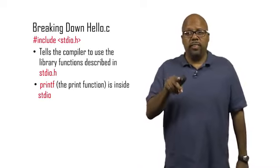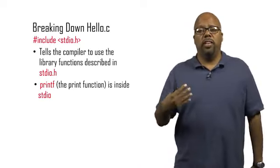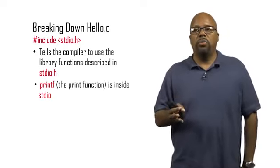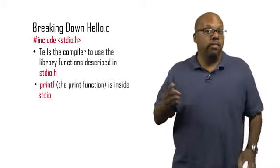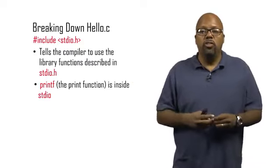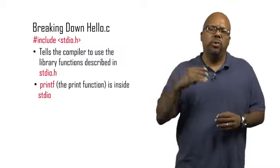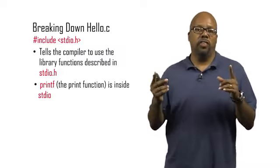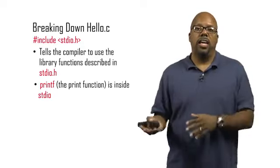In this case stdio.h is a library, standard library. In fact, it stands for standard IO. And standard IO library has all the standard IO input output functions like printf for printing. So if you ever want to do printf, you've got to include the standard IO library. So this basically takes the library, the .h file for the library, the header file for the library, and includes it at the top.